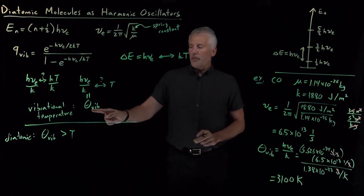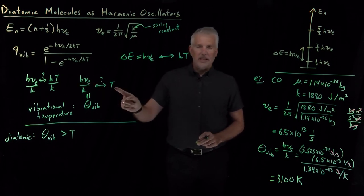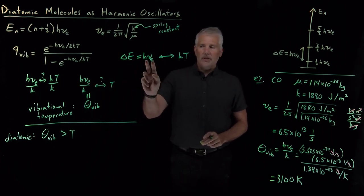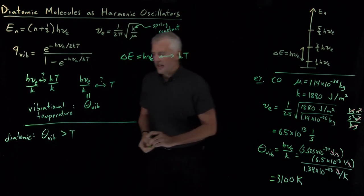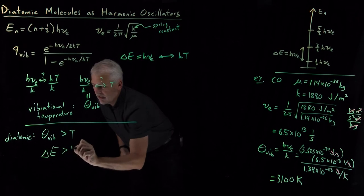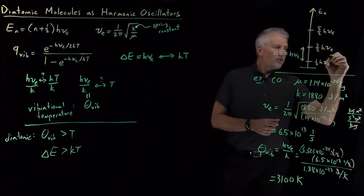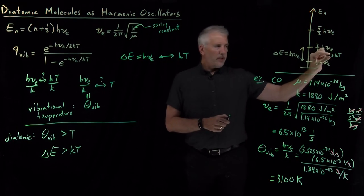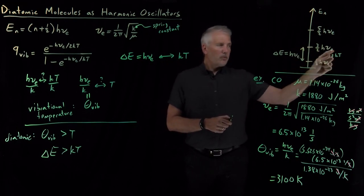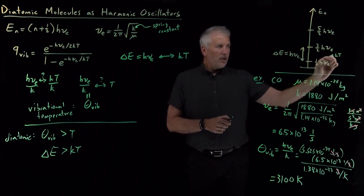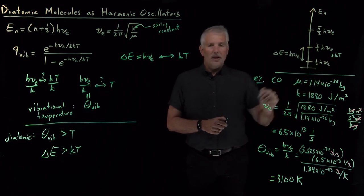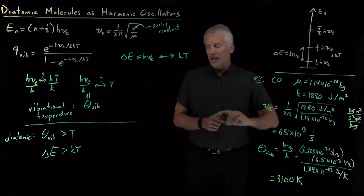If the vibrational temperature is larger than the actual temperature, that's equivalent to saying hν is larger than kT — the energy spacing between levels is larger than kT. The thermal energy accessible at room temperature can only excite states within a few multiples of kT above the ground state. Since each energy level is about 3,100 K worth of energy above the next, and we only have 300 K of thermal energy, very few states above the ground state end up occupied.